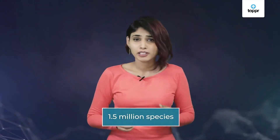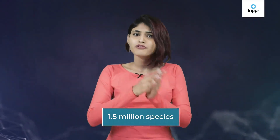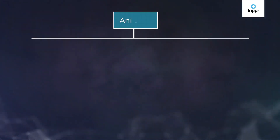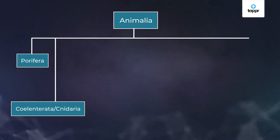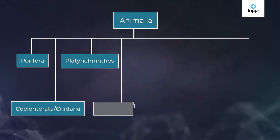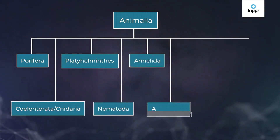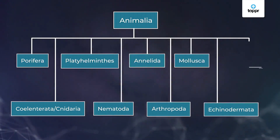Kingdom Animalia is the most diverse and largest kingdom, consisting of about 1.5 million species, so it has to be further subdivided in order to study the species better. Kingdom Animalia is divided into many subgroups called Phyla: Porifera, Coelenterata or Cnidaria, Platyhelminthes, Nematoda, Annelida, Arthropoda, Mollusca, Echinodermata, and Chordata. We will learn about each one of them in the upcoming sessions.